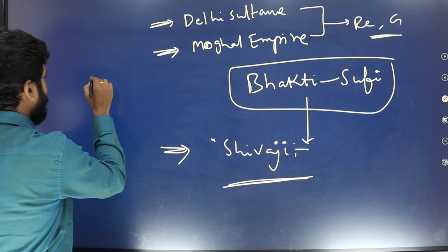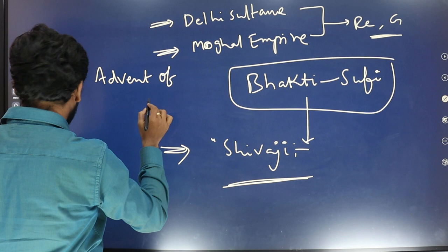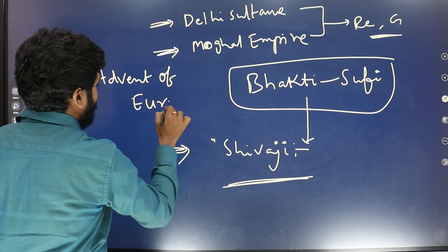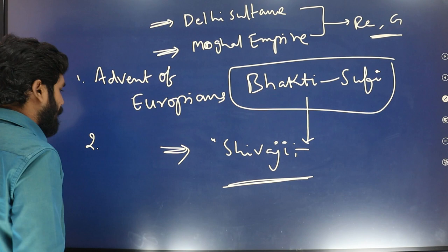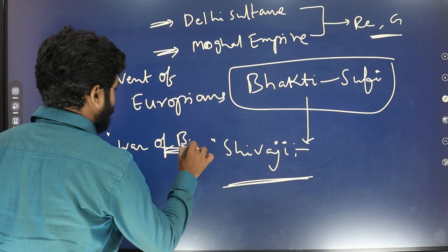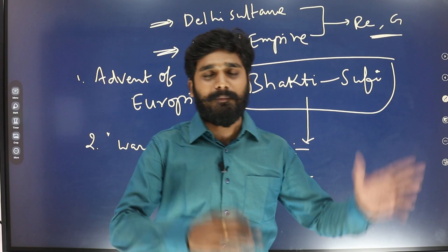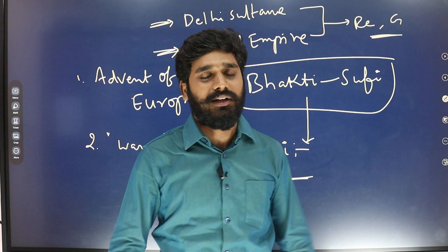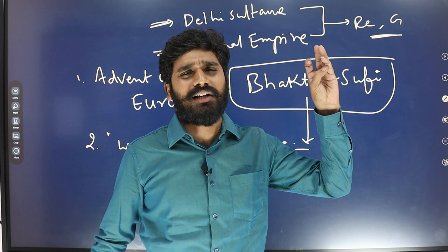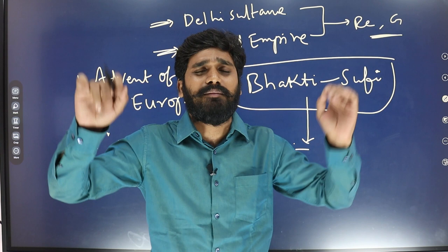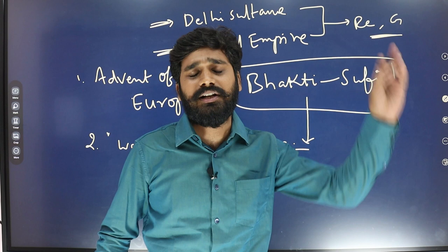After Shivaji, we must read about the advent of Europeans. After the European advent, we will discuss the wars fought by the British: the Carnatic wars (also known as Anglo-French wars), Anglo-Maratha wars, Anglo-Mysore wars, and Anglo-Sikh wars. All these wars will be covered in Indian history.